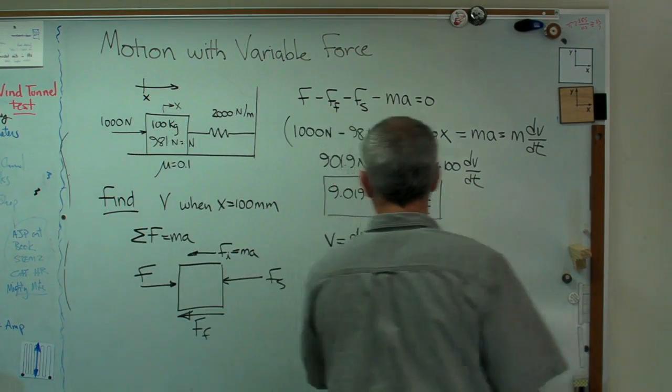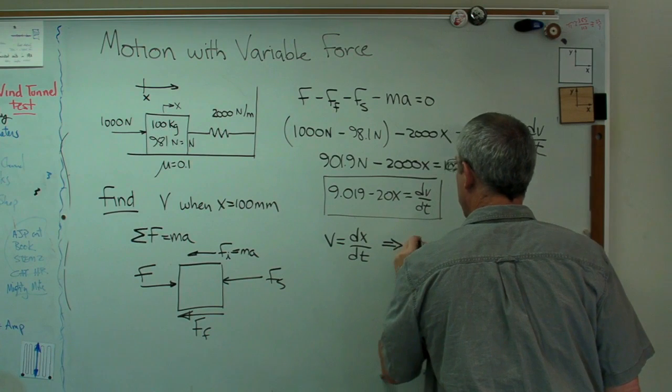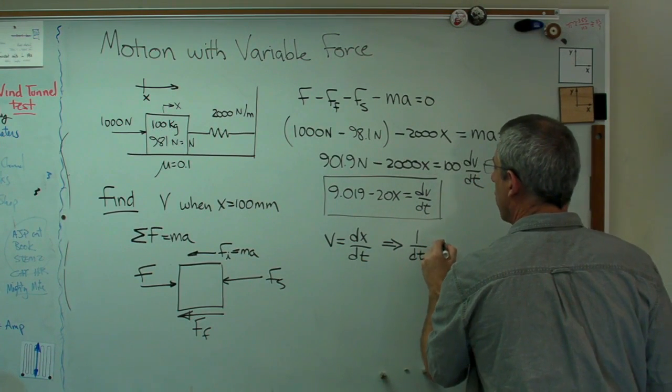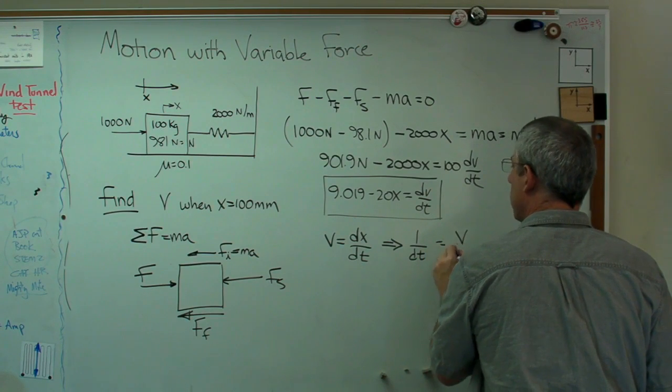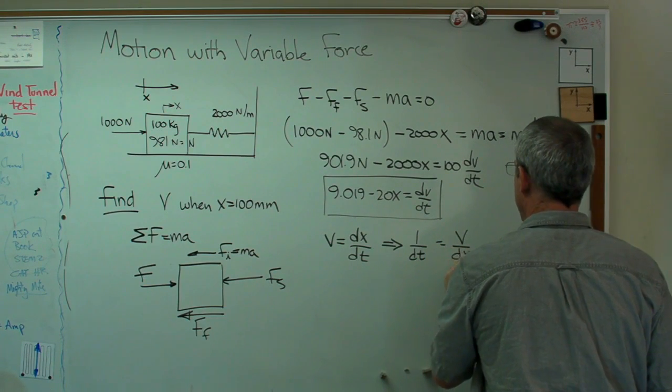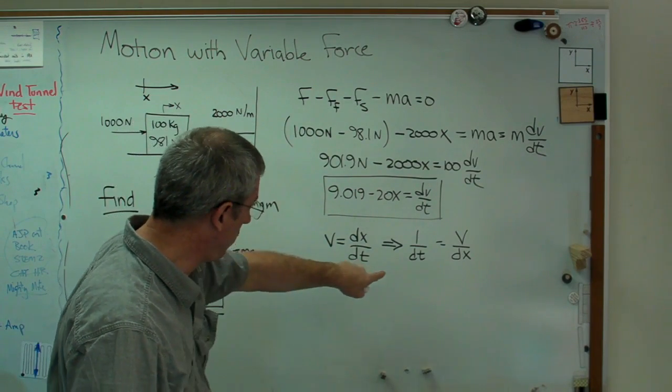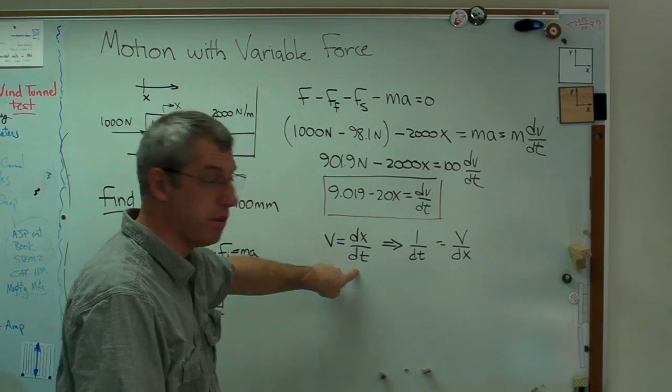Well, that means that 1 over dt, I'm just going to go over this right there, equals v over dx. And that's just a mathematical manipulation. I'm not sure what this means physically. I know what that means. But I'm pushing variables around just like I do in any other kind of equation.